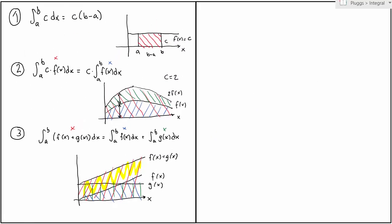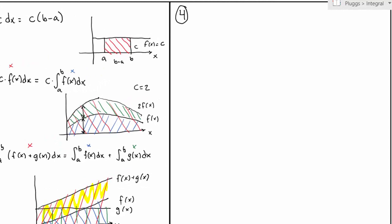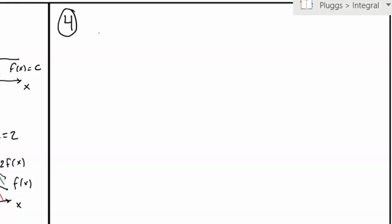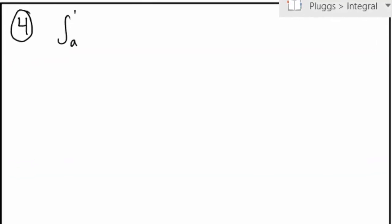Well, if the yellow and the green is the same, then the blue plus the green must also be the red. Finally, the fourth rule deals with breaking up the domain of the integral.